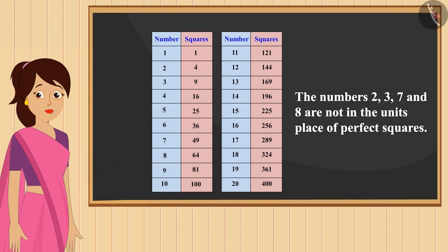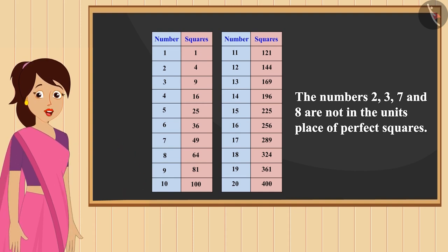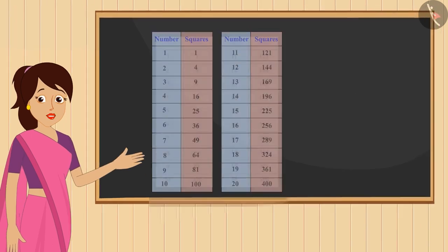Can you find a square number that has one of these digits in the units place? You will not be able to find such a number because there is no such square that ends with these digits.